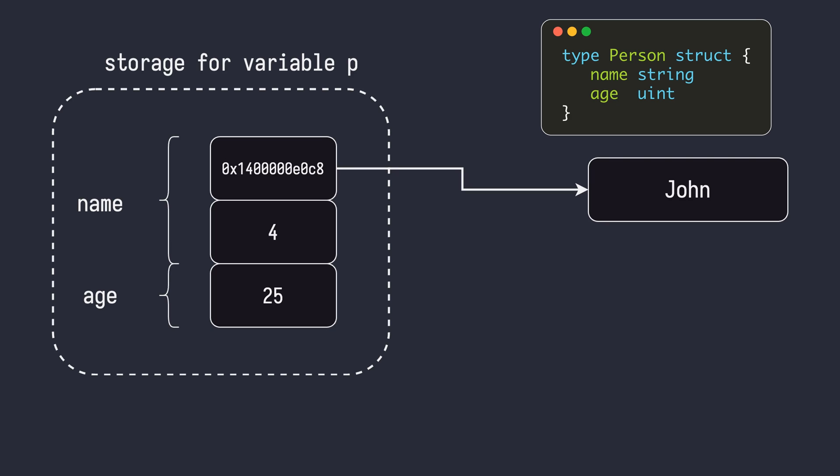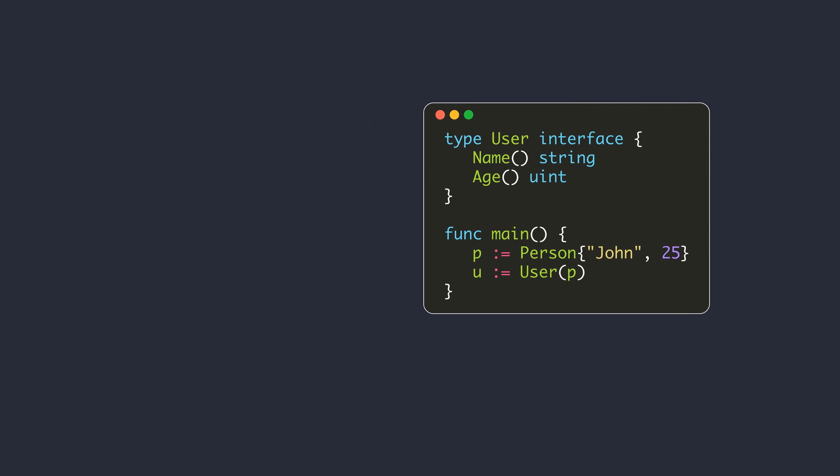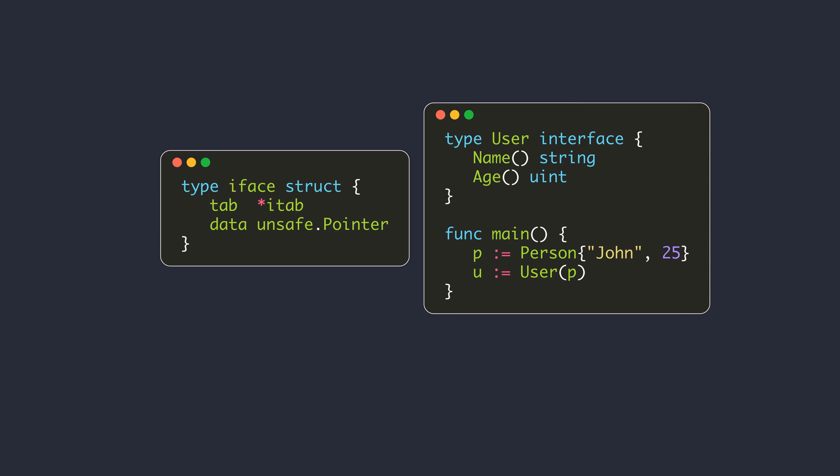The memory representation for this struct type will look like this. A string is represented using two fields: a pointer to the underlying bytes and a field storing the length of the storage array. Next, we convert the person struct value to a user type, which is an interface. Now the variable U is a value of the user interface type and it stores a value of our person struct. An interface is represented using two machine words in memory. The word size for a 64-bit CPU is 64 bits or 8 bytes — the same as the size of the pointer type.